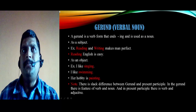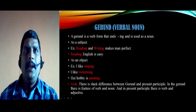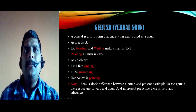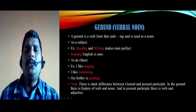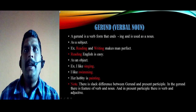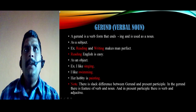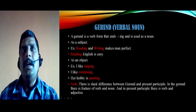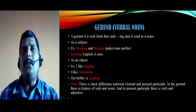Now, what is meant by a gerund? We call it a verbal noun. The definition of a gerund is: a gerund is a verb form that ends in '-ing' and is used as a noun. Like the infinitive, a gerund can also act as a subject, object, and complement. For example: 'Reading and writing makes man perfect' — here the gerund acts as a subject. Another example: 'Reading English is easy' — 'reading' (read + ing) is a gerund acting as a subject.